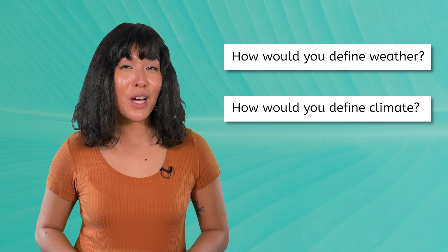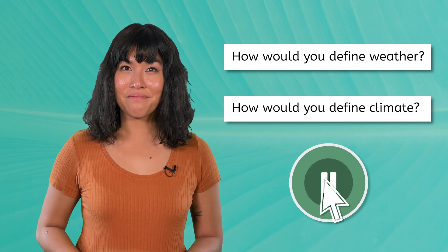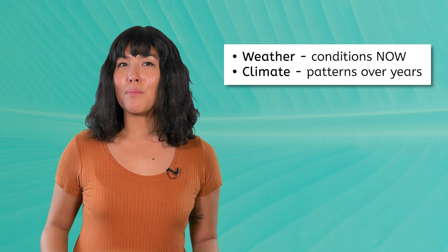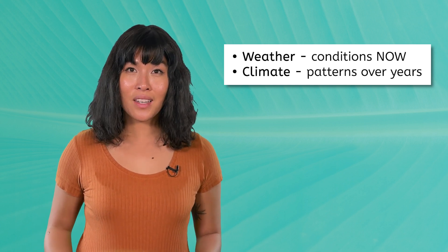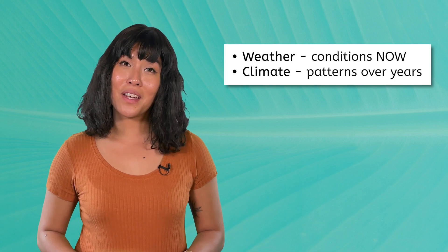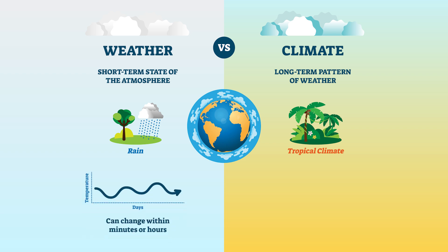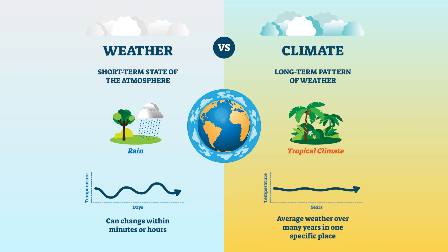Take a moment to pause this video and record your thoughts. Did you notice that the weather example looked at the conditions now, while the climate example looked at patterns over 30 years? This is a key difference between weather and climate. Weather can be defined as the short-term state of the atmosphere in a specific location, while climate is the long-term pattern of weather in that location. Weather can change quickly within hours or even minutes, as we saw earlier with our picnic. Climate, however, looks at the average weather patterns over many years in that specific location.